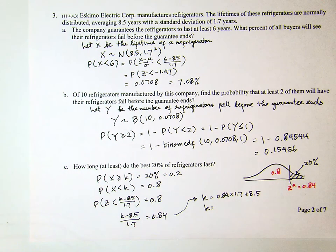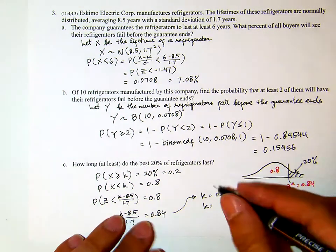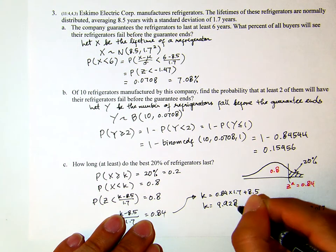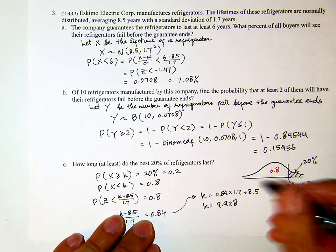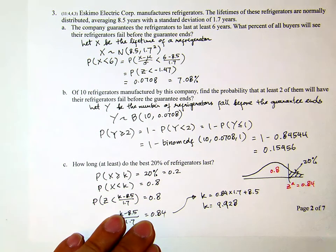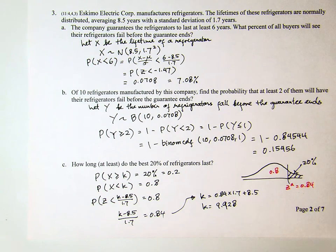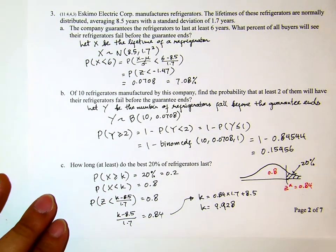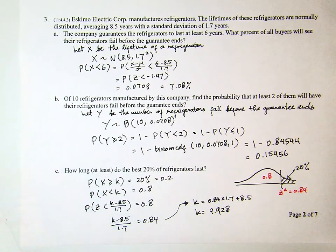Using my calculator: 0.84 times 1.7 plus 8.5 equals 9.928 years. So the best 20% of refrigerators will last at least 9.928 years. This is from Fall 2011 Math 227 Final, Number Three.